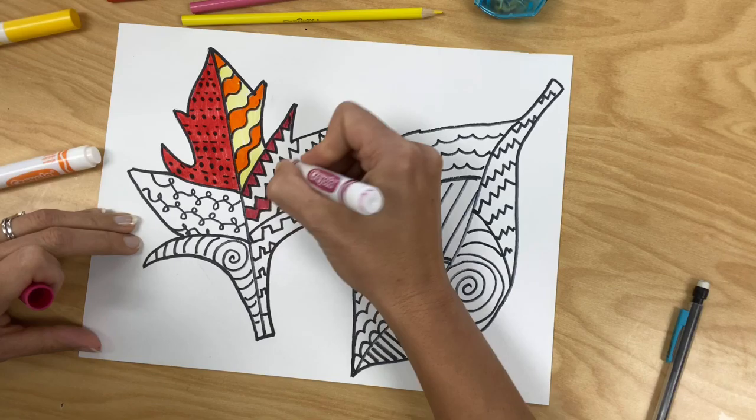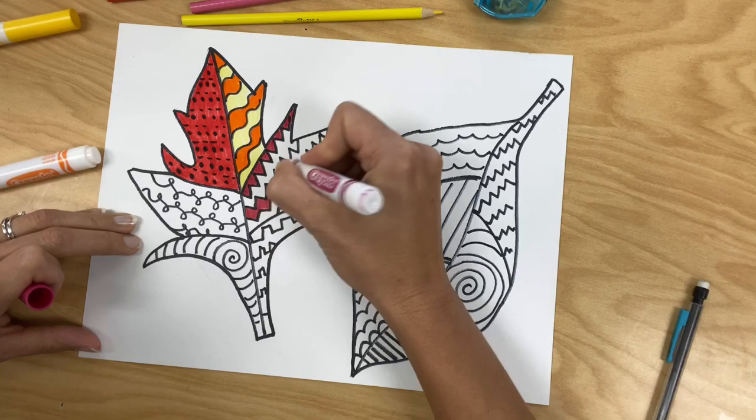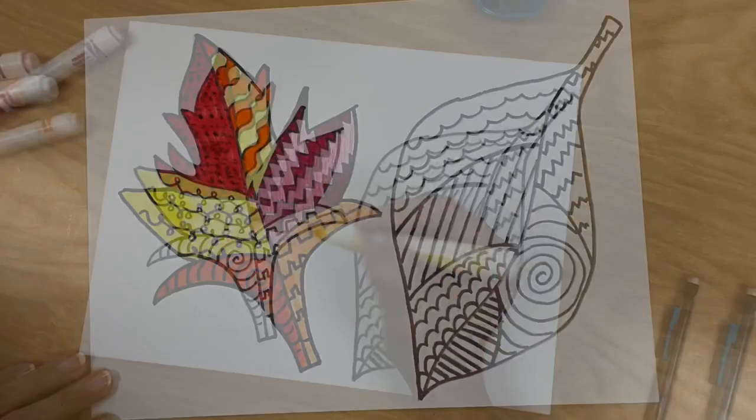Do your best work and make sure that you fill in all of the space of the interior leaves. We don't want to see any white space left when we are done.